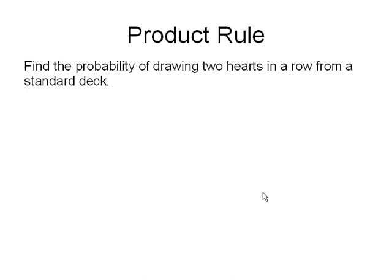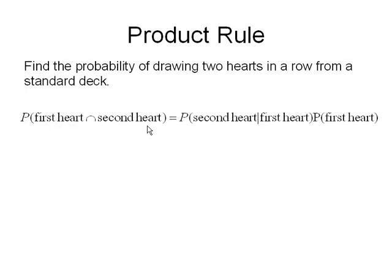Find the probability of drawing two hearts in a row from a standard deck. I want to know the probability that the first card is a heart and the second card is a heart. So first card is a heart intersected with second card is a heart. Using my product rule, that means the probability that the second is a heart given that the first is a heart times the probability that the first was a heart.